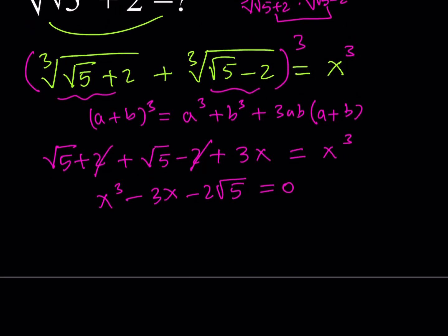One of the solutions of this equation is x = √5. The other solutions are complex, so we don't care about them. So x, which is the cube root of (√5 + 2) plus the cube root of (√5 − 2), equals √5.